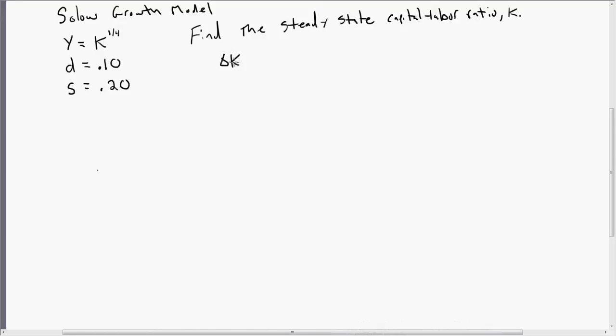The change in capital equals investment per worker, I, minus depreciation. In the steady state, the capital labor ratio doesn't increase or decrease, it just stays constant. So in the steady state, the change in capital is zero. So setting this equation equal to zero.